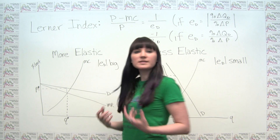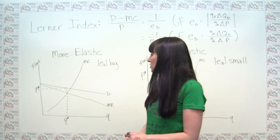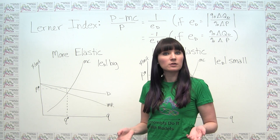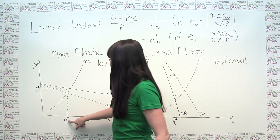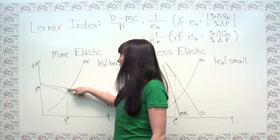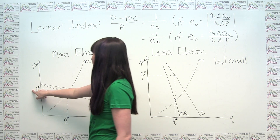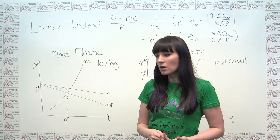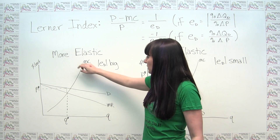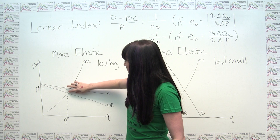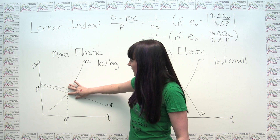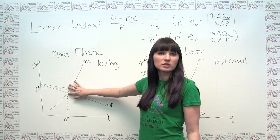What price is this company going to charge? Well, it's going to charge the highest price it can such that consumers will still buy all of its output. We can see that by going up from Q star to the demand curve, and that's going to give us our profit maximizing price, P star. What we can see here, in this case where we're facing more elastic demand, is that the distance between the price charged and the marginal cost of production at that quantity is actually pretty small.